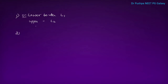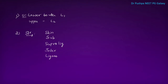Next point: what are the structures punctured during spinal anesthesia? They are skin, subcutaneous tissue, supra-spinous ligament, inter-spinous ligament, ligamentum flavum, dura mater, and arachnoid mater.